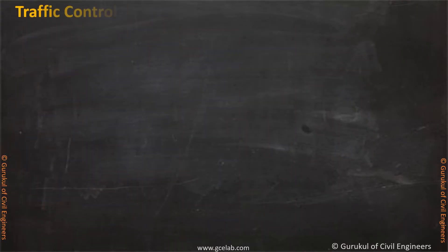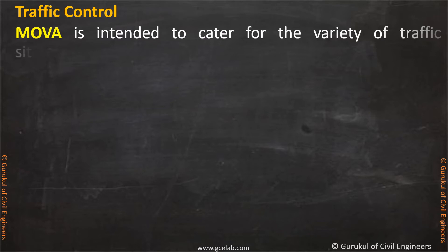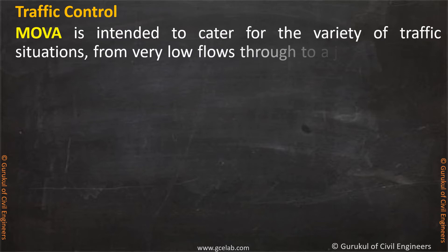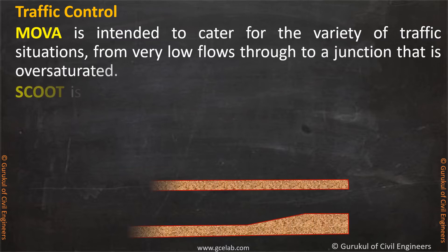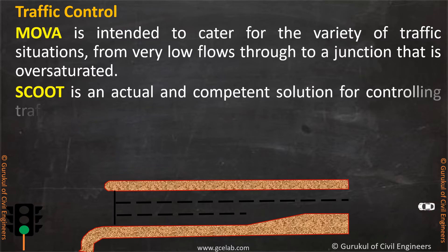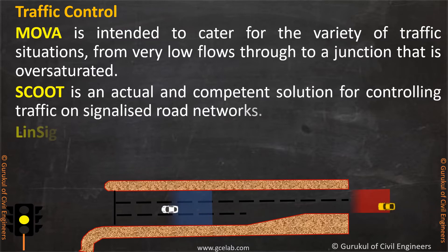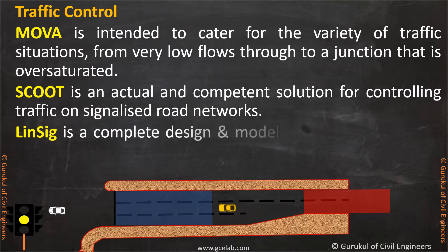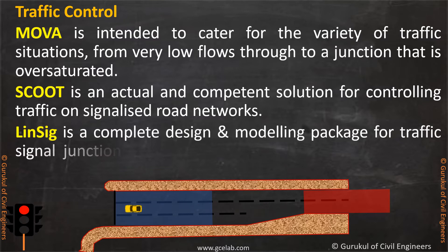Traffic control. Mova is intended to cater for the variety of traffic situations, from very low flows through to a junction that is oversaturated. Scoot is an actual and competent solution for controlling traffic on signalized road networks. Linsig is a complete design and modeling package for traffic signal junctions, individually or in a network of numerous junctions.